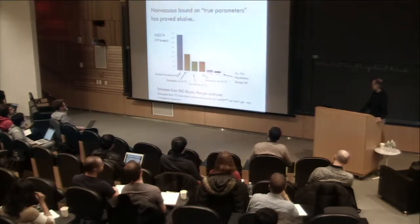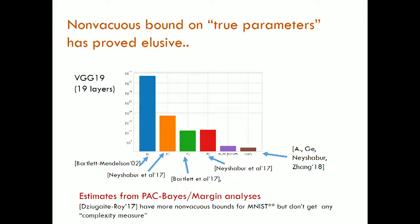This is our new paper with Rong Ge, Behnam Neyshabur, and Yi Zhang. Ge is a former student, now faculty at Duke; Behnam is a postdoc at IAS; and Yi Zhang is a grad student. We get estimates that are at least on the order of the number of parameters — still not 50,000, and I have no idea how to push it down to 50,000, but at least we start getting something slightly non-trivial.